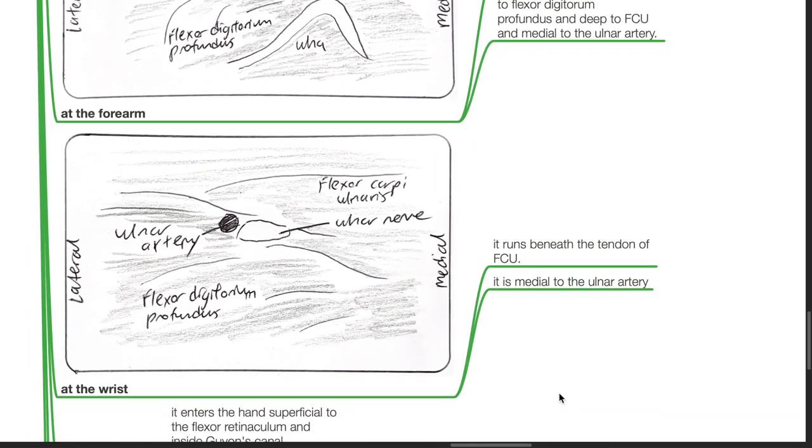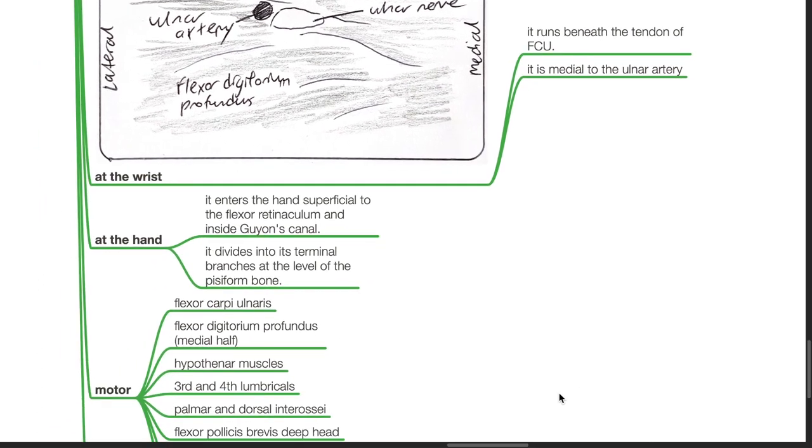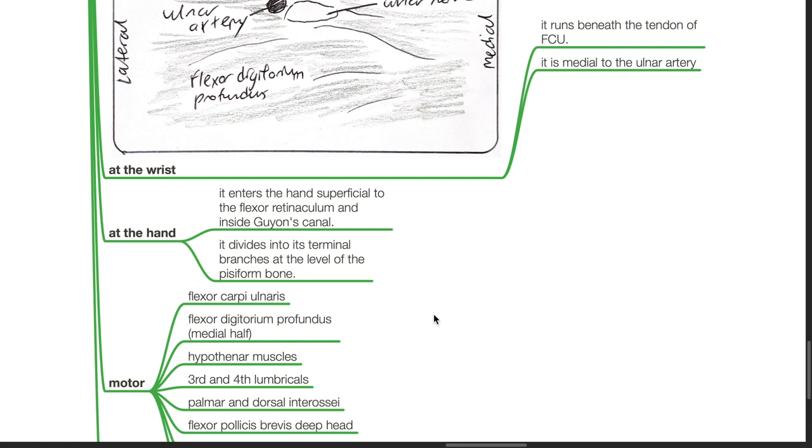At the level of the wrist, it runs beneath the tendon of the flexor carpi ulnaris, medial to the ulnar artery. At the hand, it enters superficial to the flexor retinaculum and inside Guyon's canal. It divides into its terminal branches at the level of the pisiform bone.